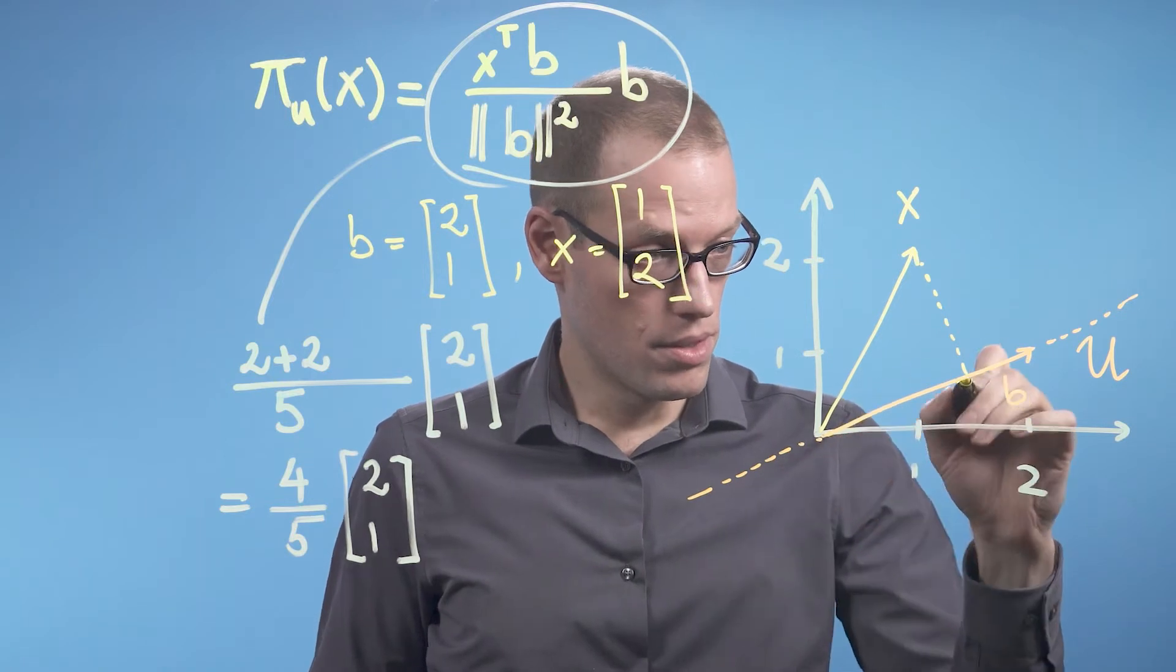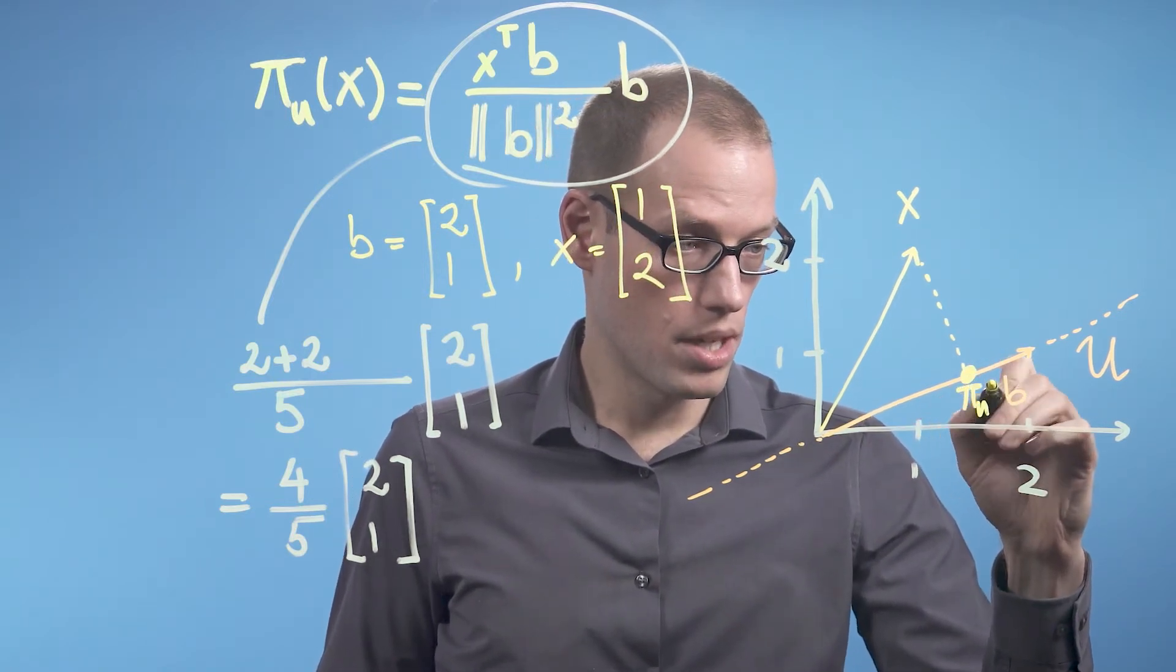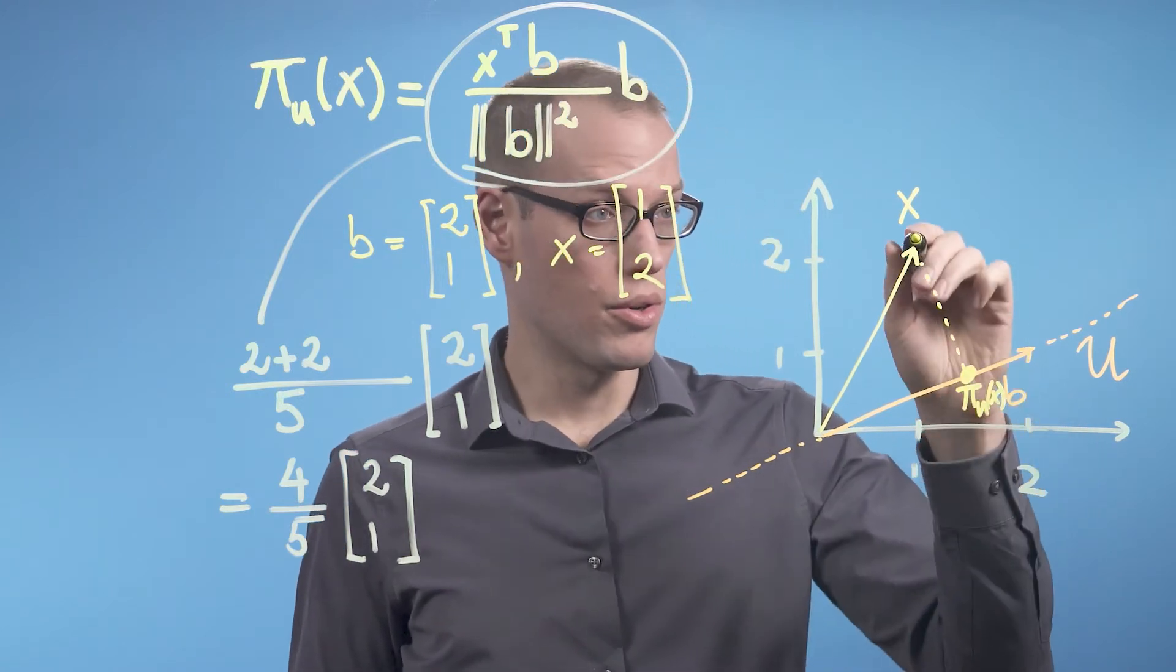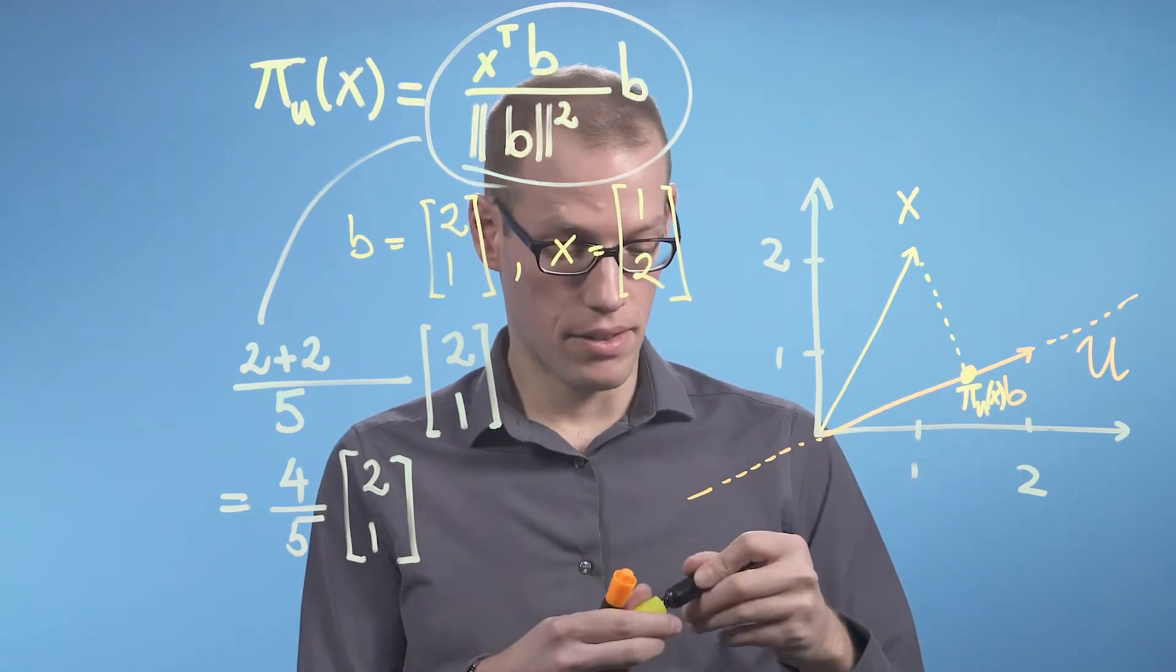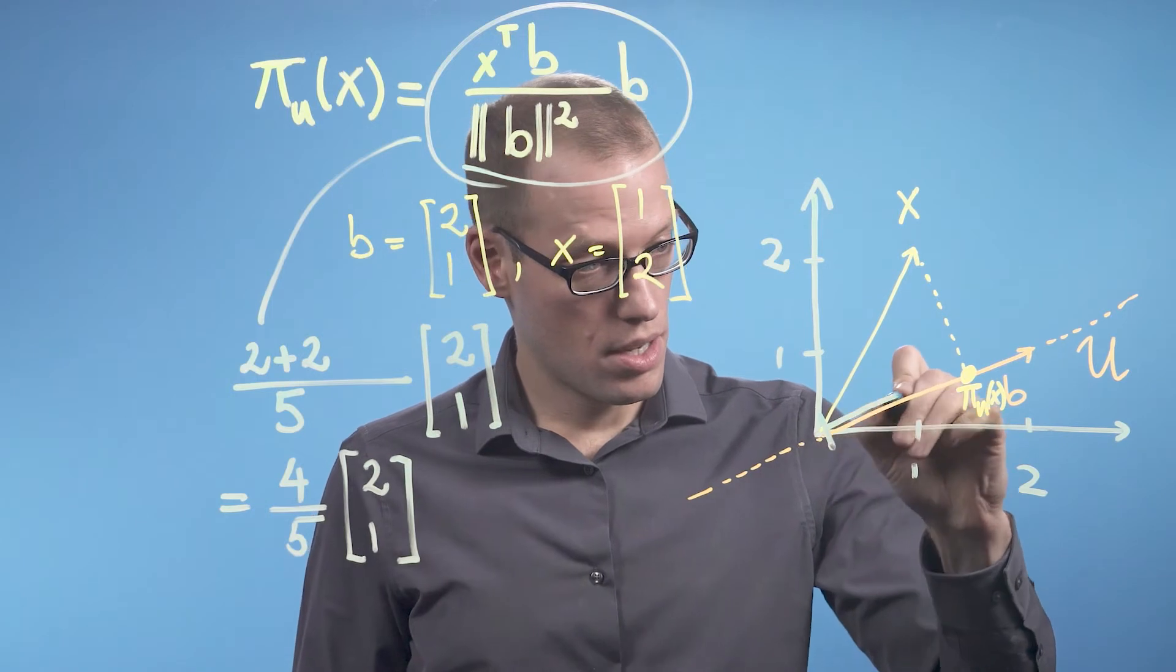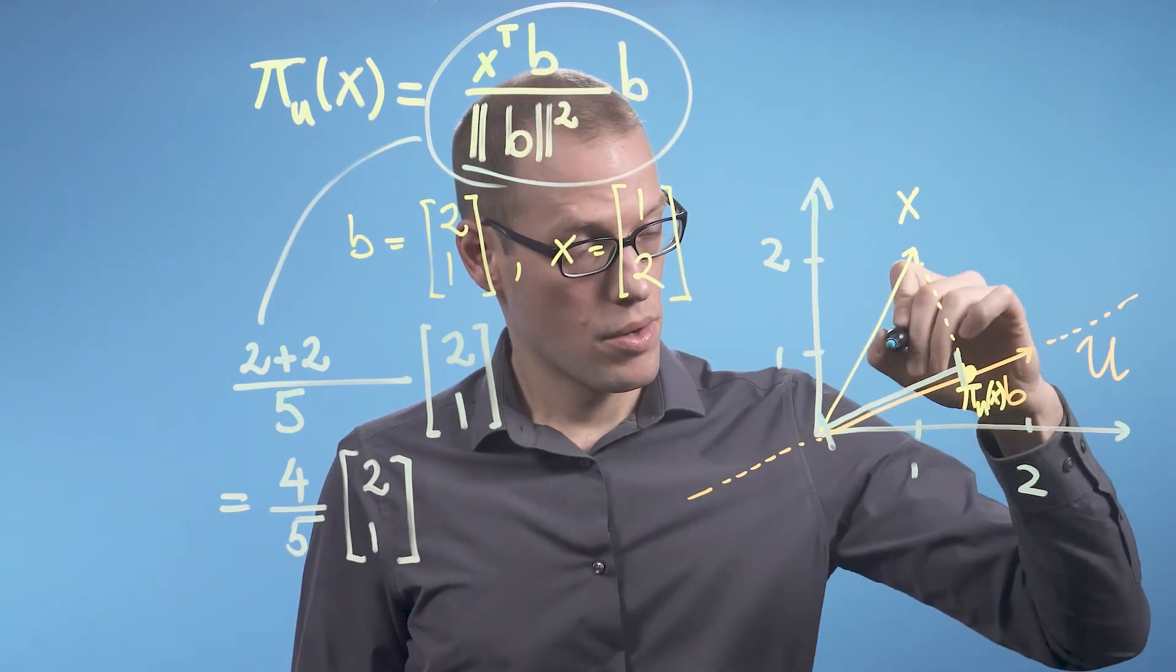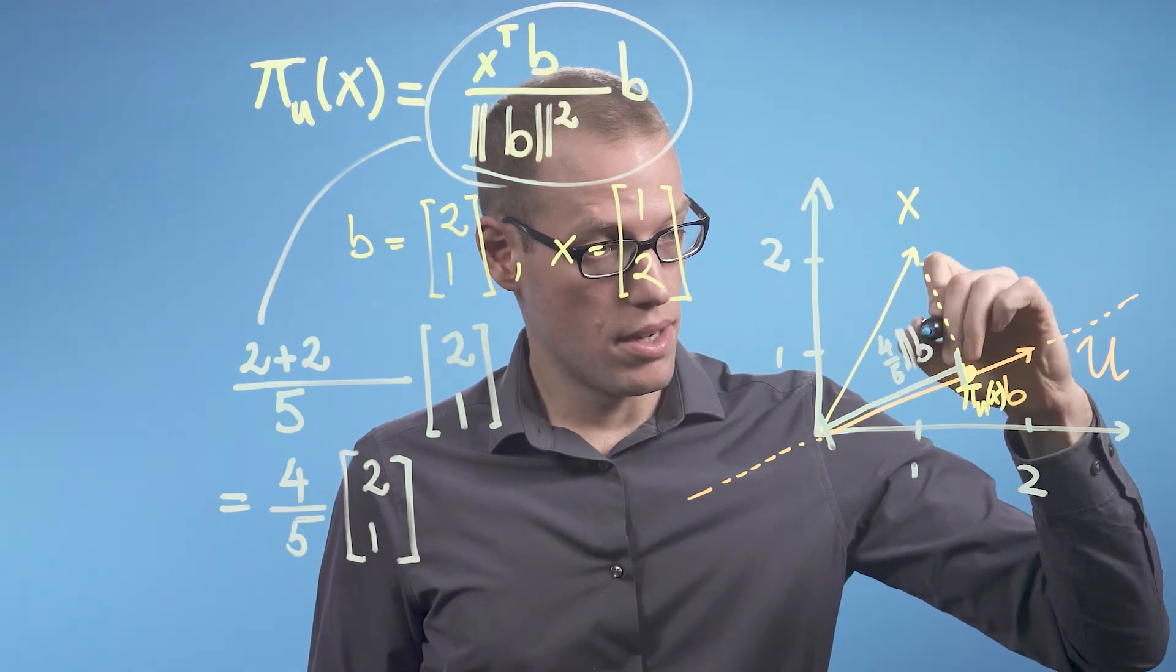So, this point here is now π_u of x, the orthogonal projection of x onto u. And the length of this segment is 4 fifths times the length of b.